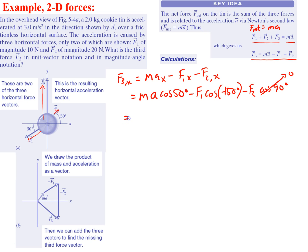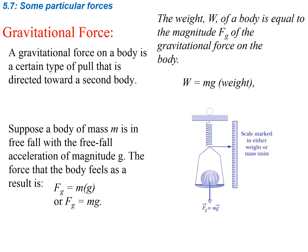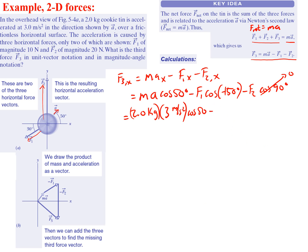Now we can plug in our values. This is going to be 2.0 kilograms times 3 meters per second squared, times cosine of 50, minus 10 Newtons times the cosine of negative 150 degrees. Solving that out, we get 12.5 Newtons. This is our X component.